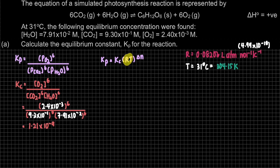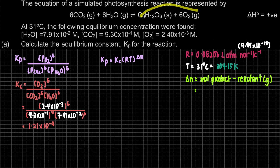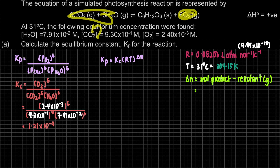Delta N is moles of gaseous products minus moles of gaseous reactants — we only count gas-state species. For the products, O₂ contributes 6 moles of gas. For the reactants, CO₂ and H₂O together contribute 12 moles of gas. So delta N = 6 − 12 = −6.